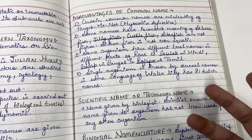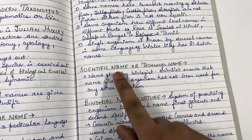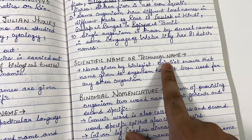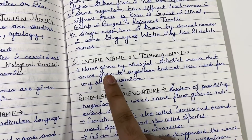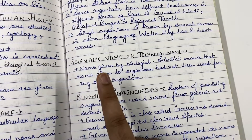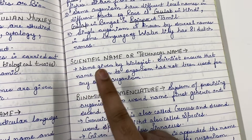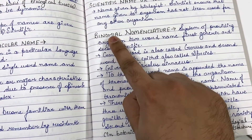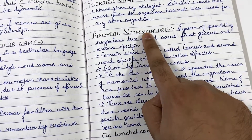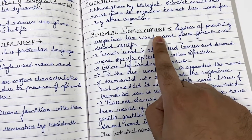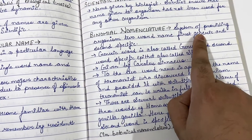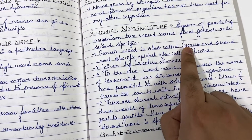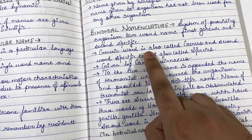Due to these problems, the need for scientific names or technical names arose. Scientific names are given by biologists and scientists to ensure that these names are universal — if a scientific name is given to one organism, it is not used for any other organism. Binomial nomenclature — 'bi' means two — means giving a two-word name to the organism, where the first word is the generic name (genus) and the second is the specific epithet (species).